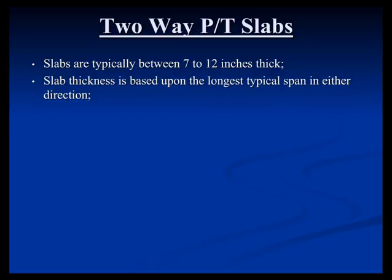The slab thickness is based upon the longest typical span. The slab thickness is probably the simplest way to make a system work or really screw it up. If you get the slab thickness right — within about a half inch of what I think is right — it's really hard to screw up the design. The P over A, the pre-compression, will come out well. The balanced loads work out well. So if you get the slab thickness right, you really have to work hard to screw this up.